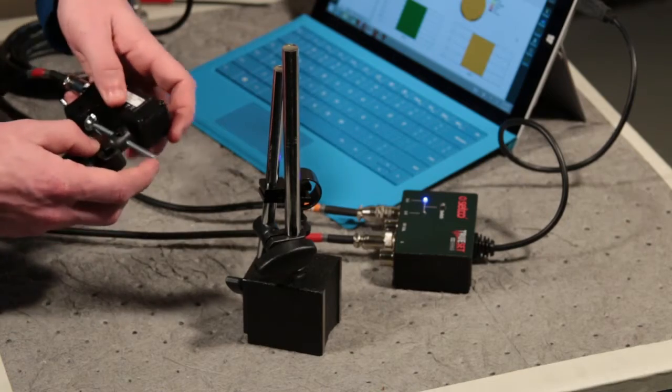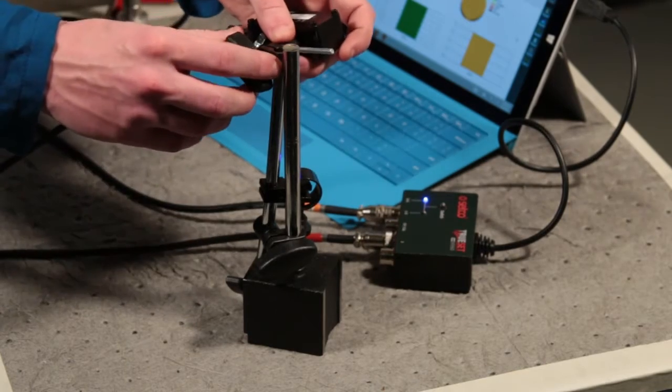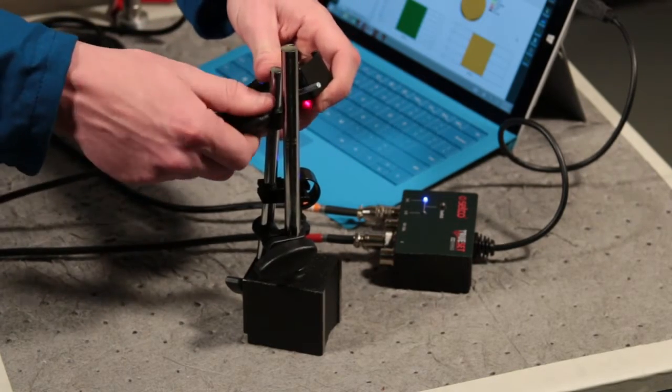When the DAC is plugged in, the tachometer should be on. Now secure the tachometer into the included mount, and then secure the mount to the magnetic base.